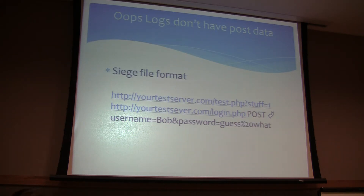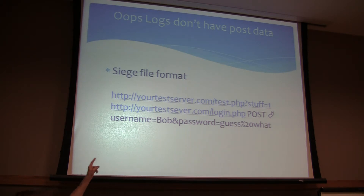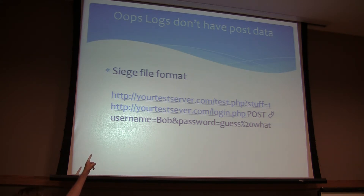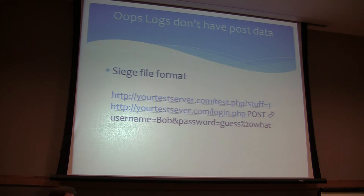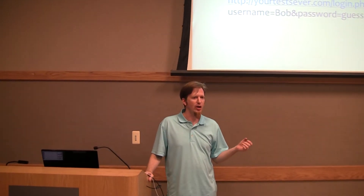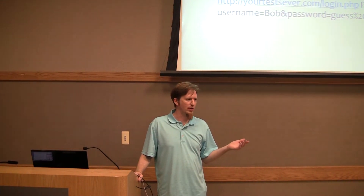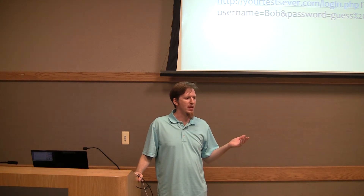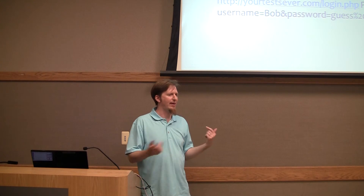The Siege file format is just a simple list of URLs. You can put your URL with query parameters at the top. If you've got to do a POST, you just put the word post and then URL encode your data. You can also pipe in a file if you wanted to post an image for testing an uploader. When you're pulling from your access log, you're not going to have any of that POST data in your log, so you'll have to go back and add that POST data in.